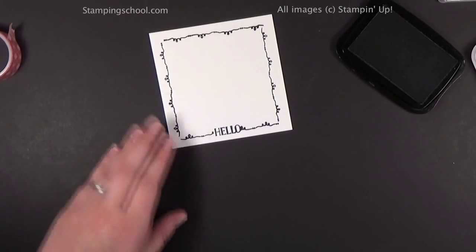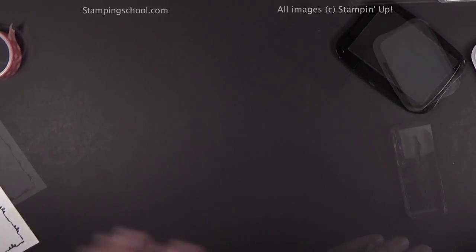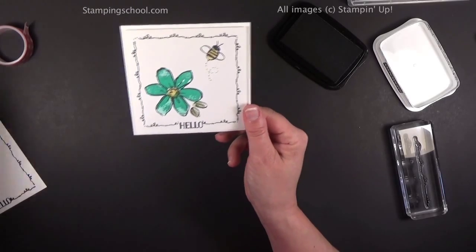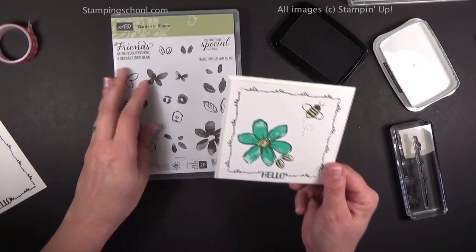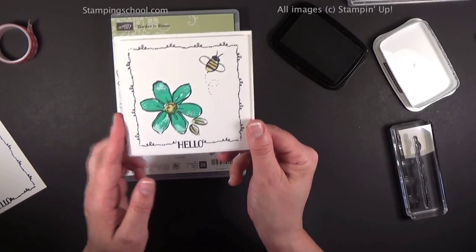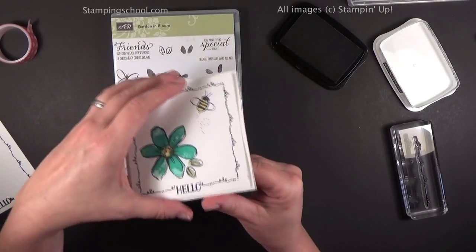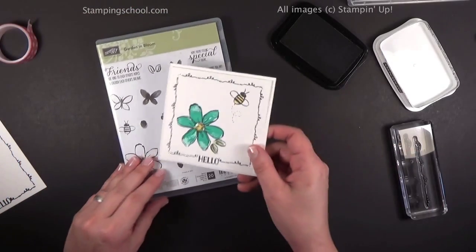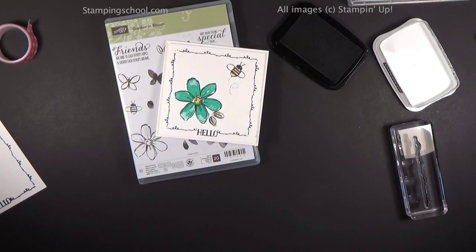In this case, I used the Garden and Bloom which has these really great little scribbly drawn flowers and bees. Did a little bee trail and a little something on the inside. So give it a try. We'll see you next time. See you, learn it, stamp it.